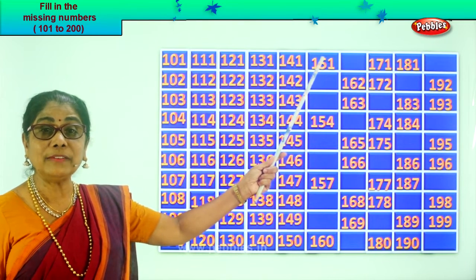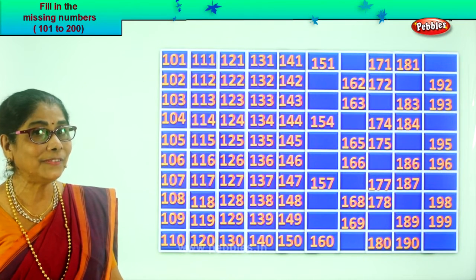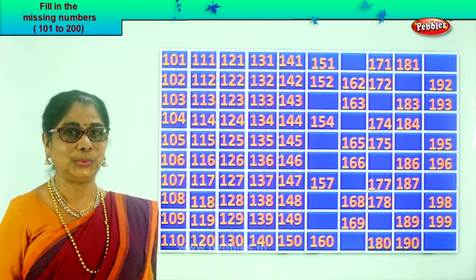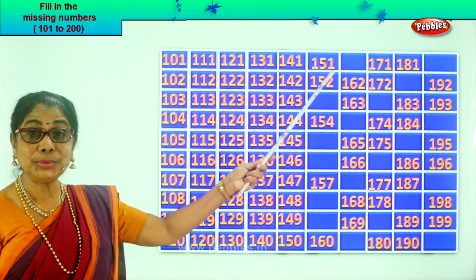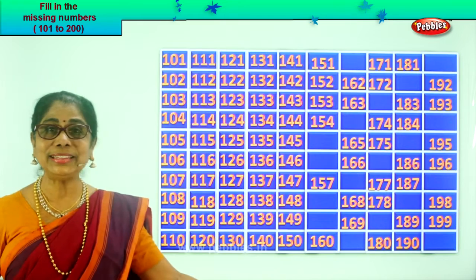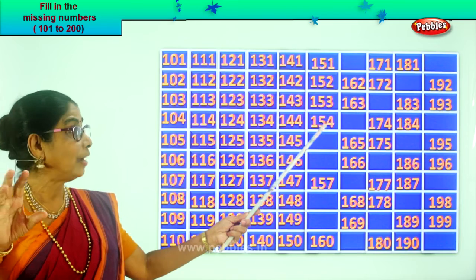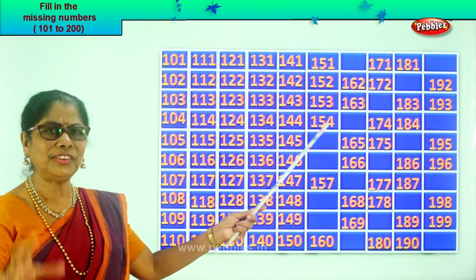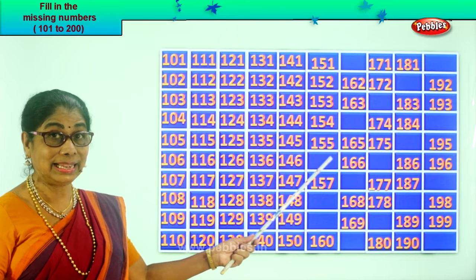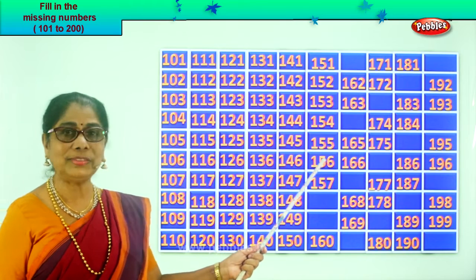Now after 150, 151. After 1, 2. After 51, 52. So we write 152. Next, after 2, 3. After 52, 53. So 153. 154. After 4, 5. After 54, 55. 155. After 5, 6. After 55, 56. We write 156.